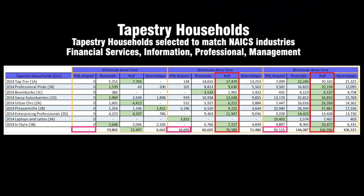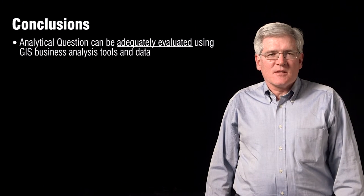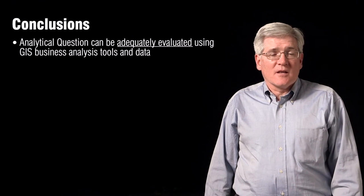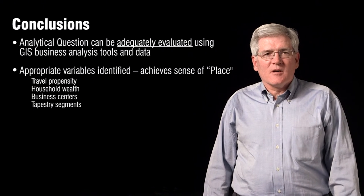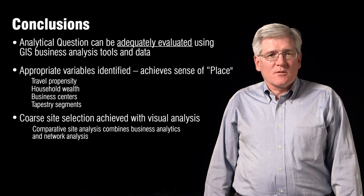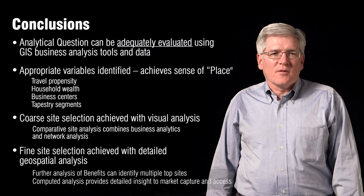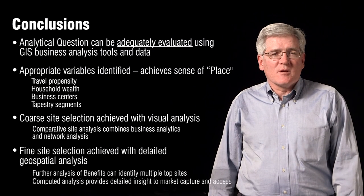In the final analysis, looking at the 20-minute drive time, of all the different demographic groups the majority align best with the King of Prussia site as having the largest numbers at the shortest driving times. So King of Prussia is going to be our choice. In conclusion, using geographic intelligence analytic methods is a very good way to analyze this particular problem. We used a sense of place — travel propensity, household incomes, and types of travelers — for the coarse site selection to yield our general location, and then fine analysis to figure out exactly where we want the locations and what is the best site. Thank you.